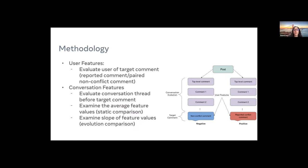For our user features, we evaluate only the users of the target comments, where the target comment refers to either the reported conflict comment or the randomly sampled non-conflict comment. For the conversation analysis, we evaluate the conversation thread from the first comment underneath the post all the way down to the comment before the target comment. We do not include the target comment in the conversation analysis, because we're looking to see how the conflict actually emerges over time. We examine both the average feature values across all these comments and the slope of the feature values to see how they evolve over time.